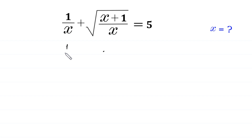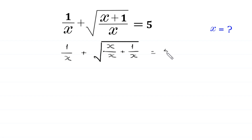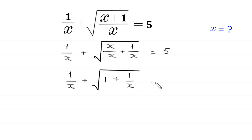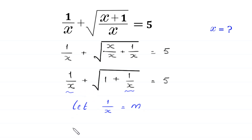Let us start. The expression 1 over x plus the square root of x plus 1 over x can be rewritten as 1 over x plus the square root of x over x plus 1 over x, which equals 5. Notice that x over x equals 1, so inside the square root we have 1 plus 1 over x. We let 1 over x equal m and substitute, giving us m plus the square root of 1 plus m equals 5.